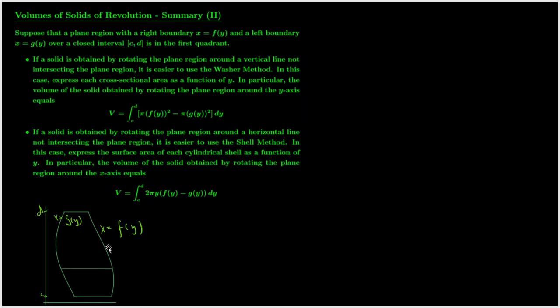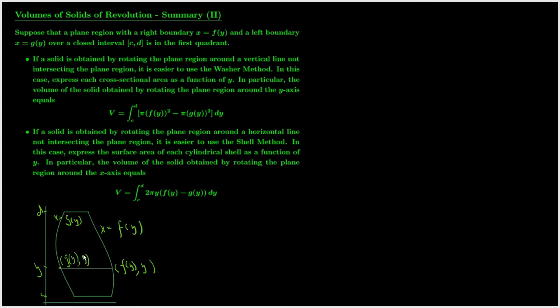In this case, if you rotate the plane region around a vertical line, then it's easier to use the washer method to set up an integral for the volume of revolution. Now for the first case, we just talk about how to set up an integral for the volume of the solid if we rotate the plane region around the vertical axis. If we rotate the plane region around any other vertical line, it's very similar.